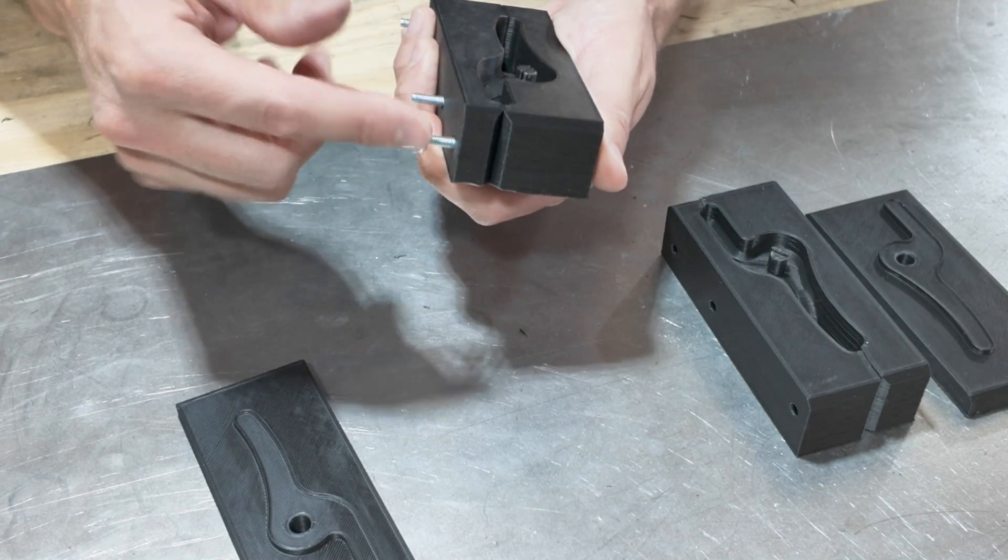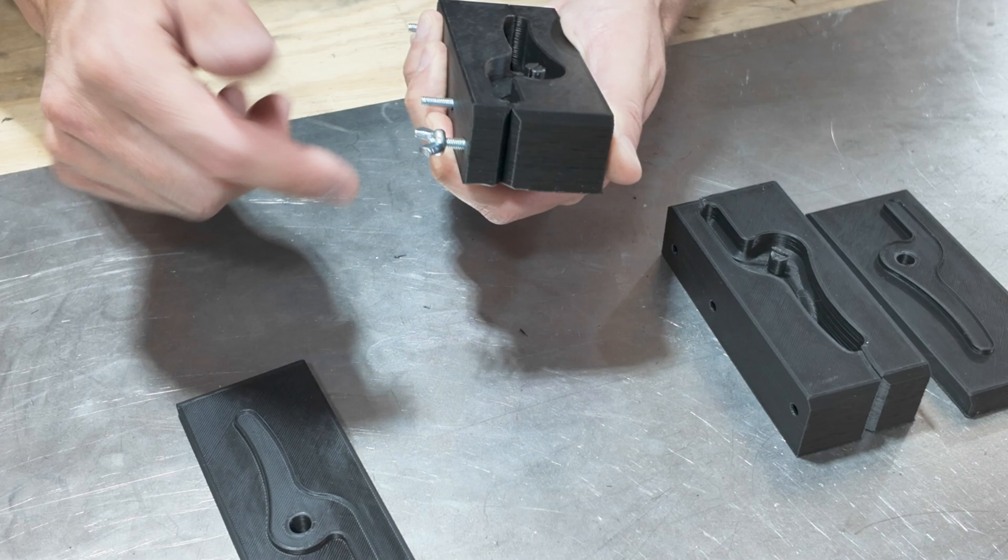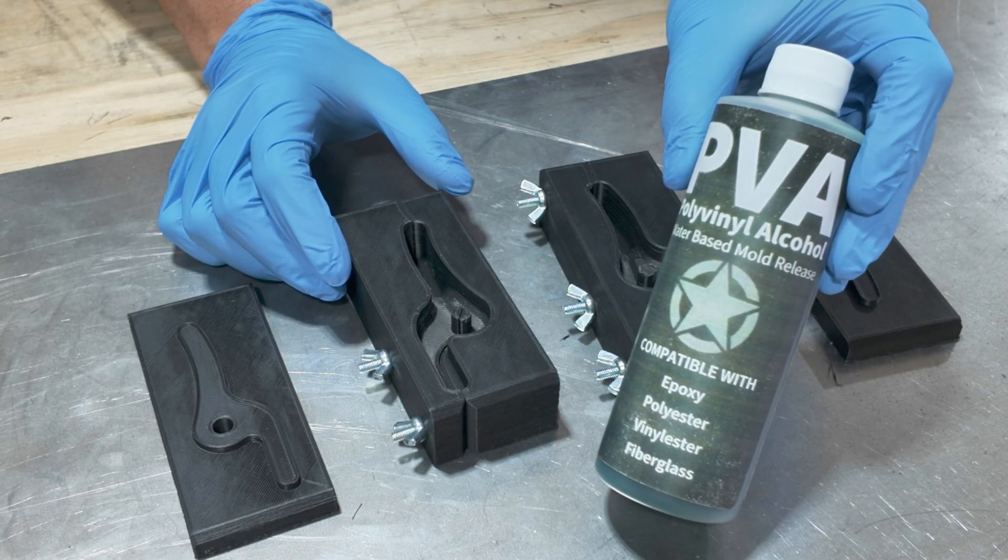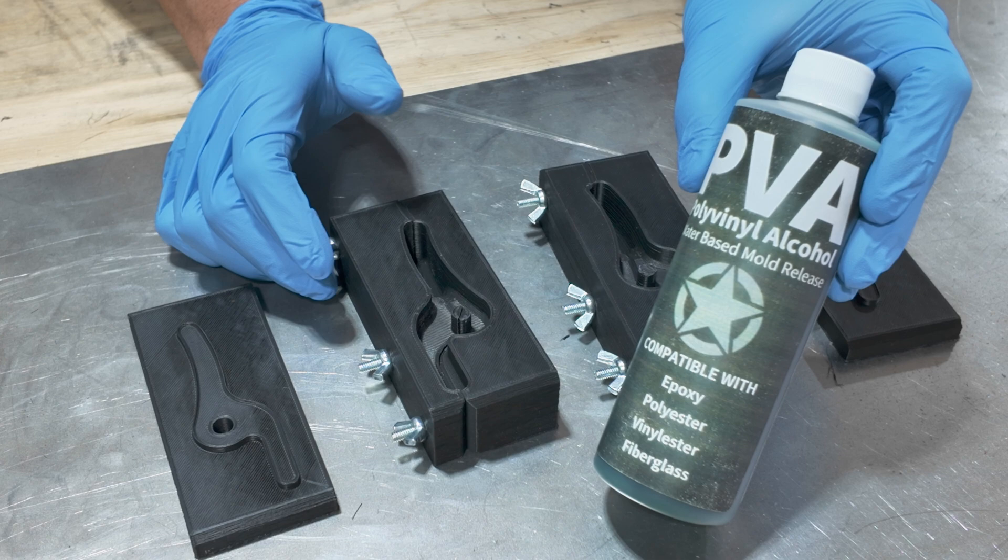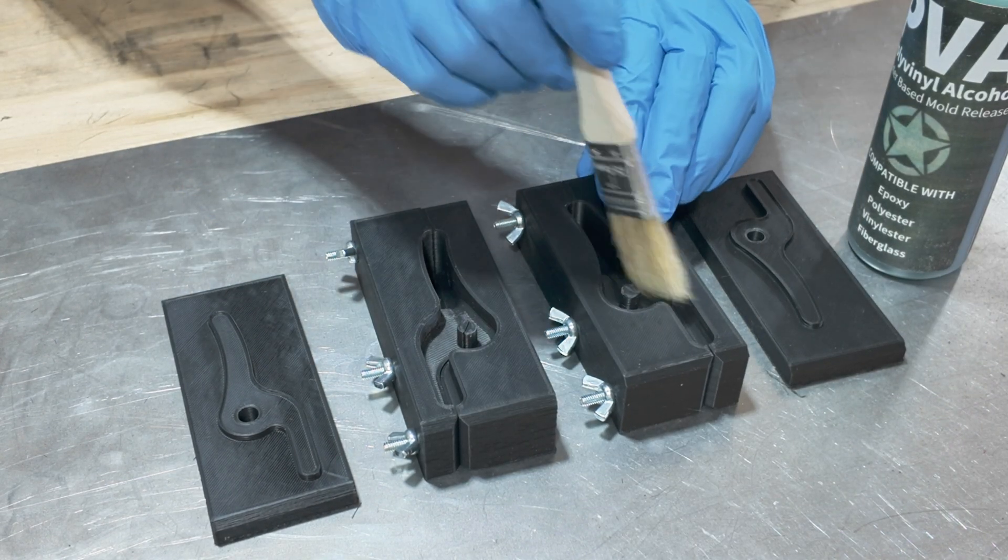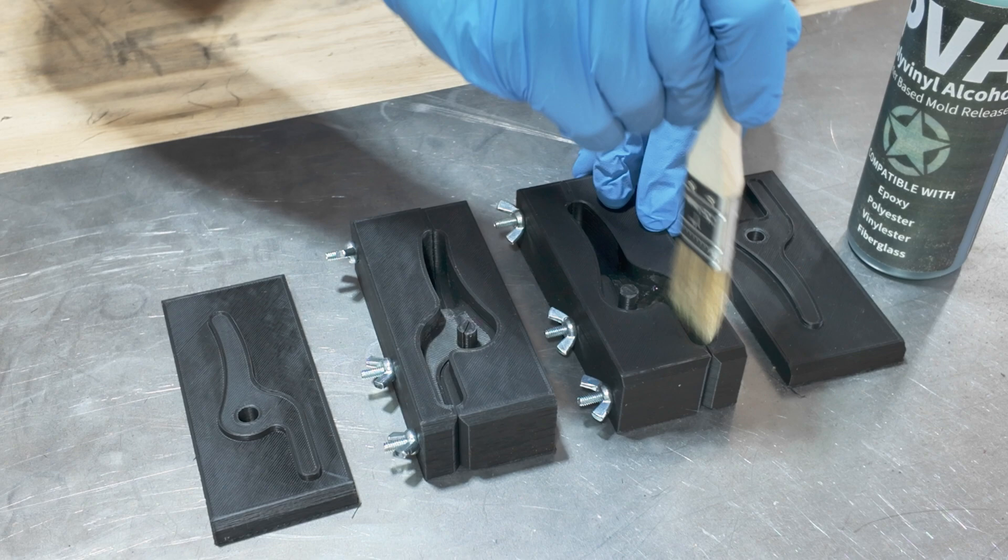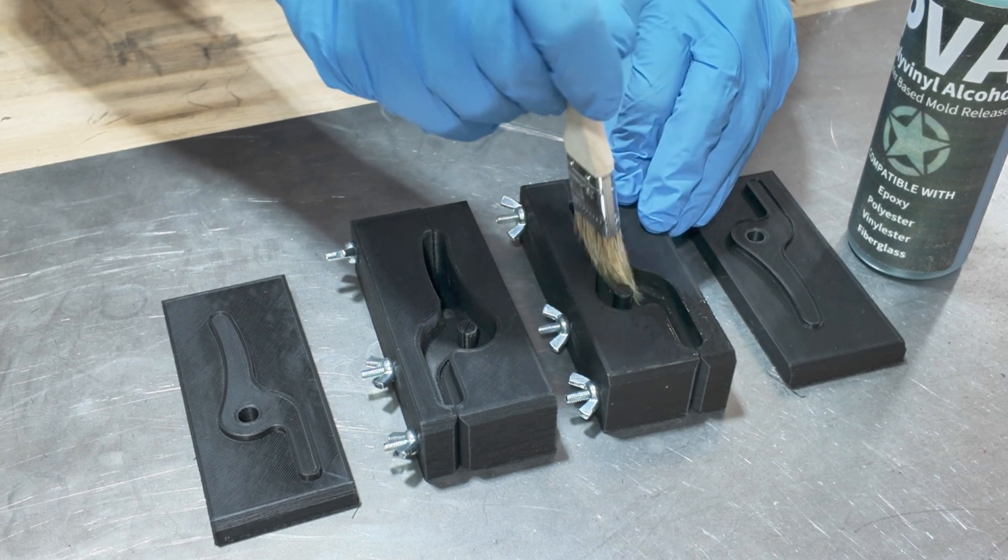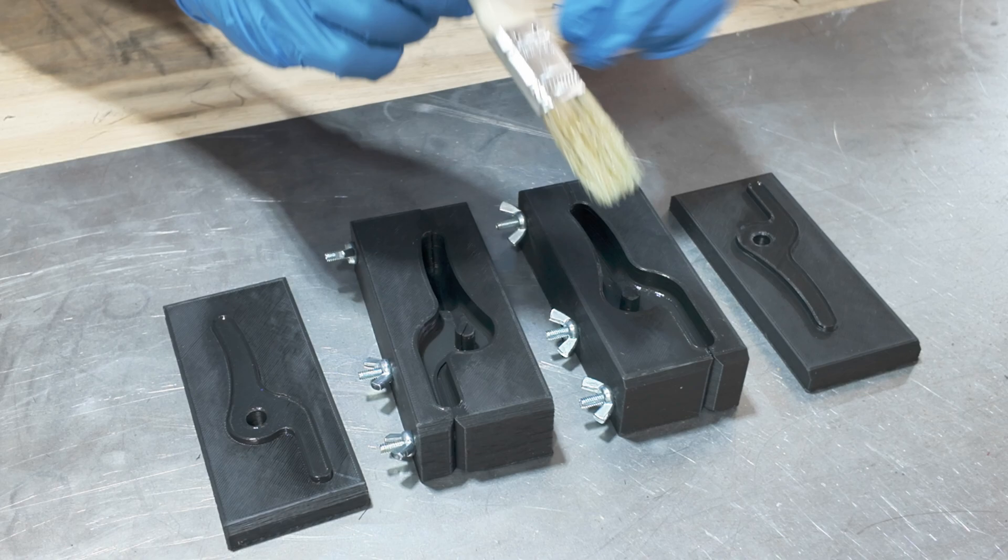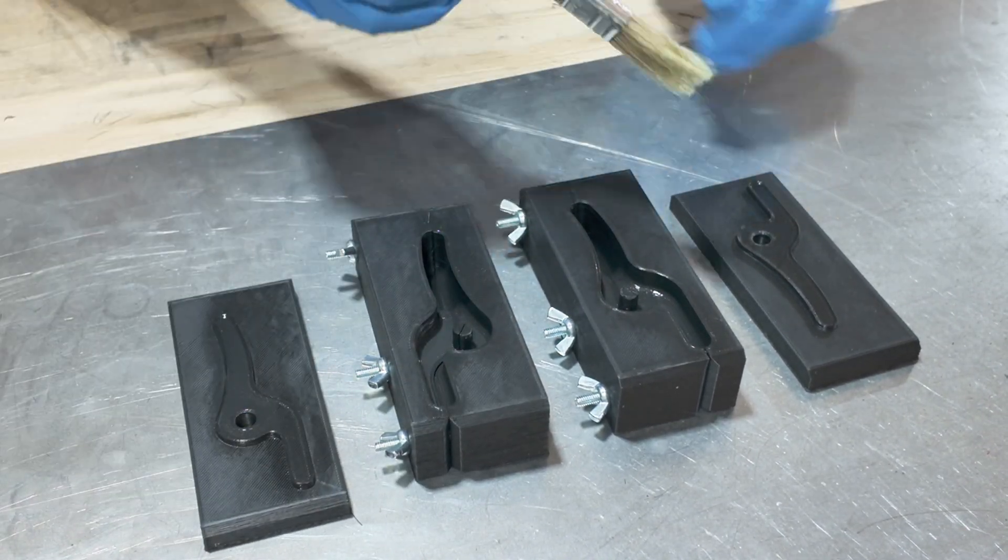All right so the first thing I'm going to do once I get those molds all prepped is I'm going to bolt these together. I'm using this PVA mold release. It's compatible for epoxy or fiberglass and this one we just brush on. I just use the cheapo brush for this. Make sure everything's nice and coated. Now this takes about 15 to 45 minutes to dry. It's best if you apply multiple coats to get a nice glossy finish.